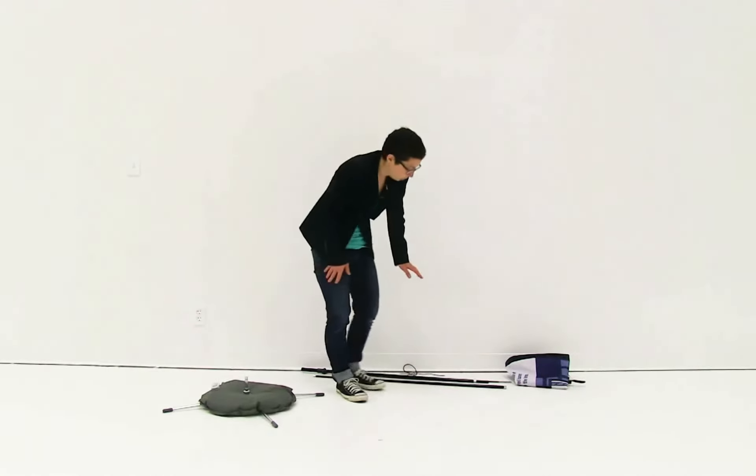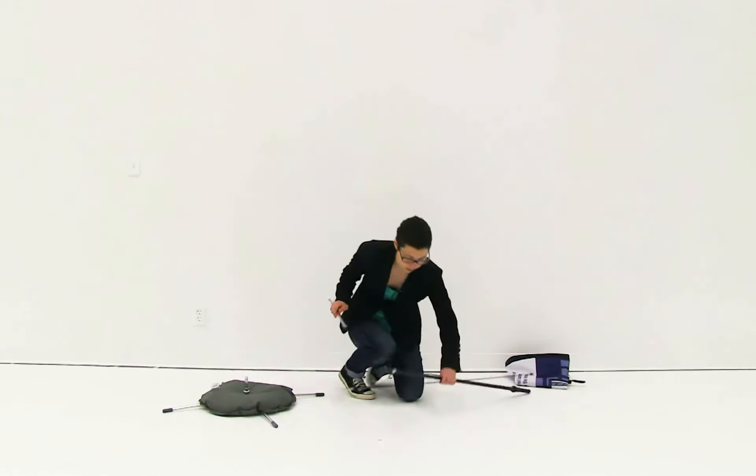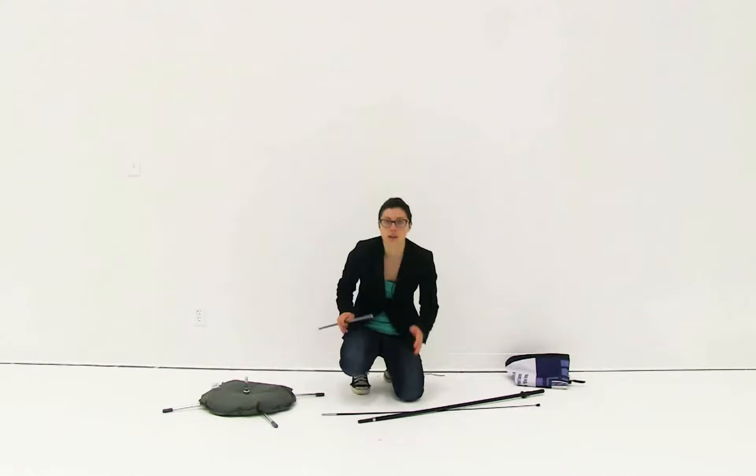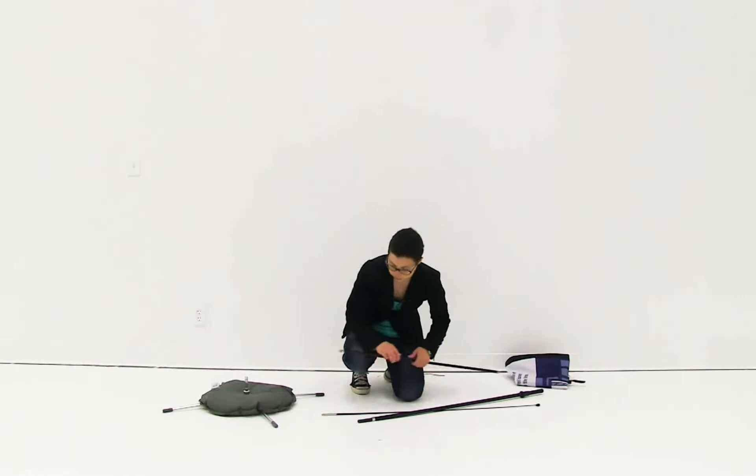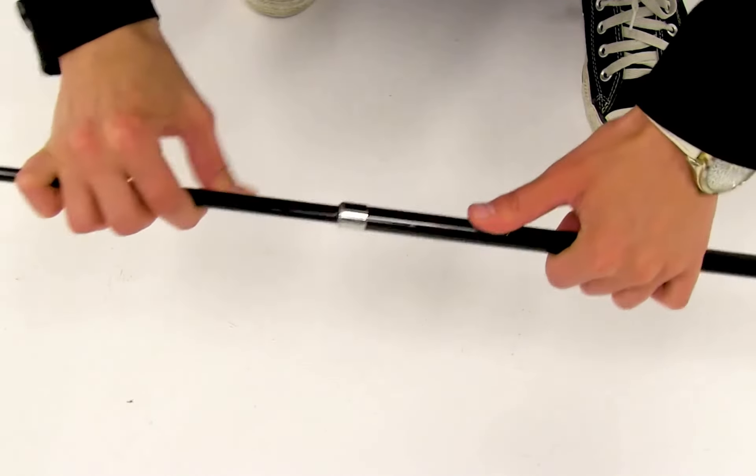Next thing I'm going to do is connect together the poles of my sale sign. Depending on how large your premium sale sign is, it could have two or three poles to connect together. I'm just going to insert the poles into each other.